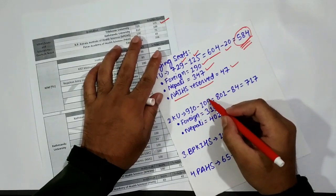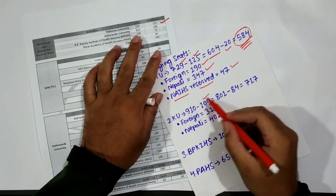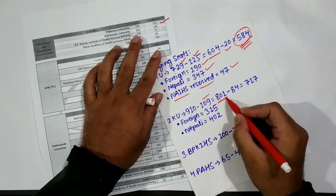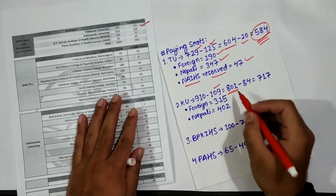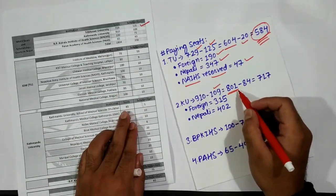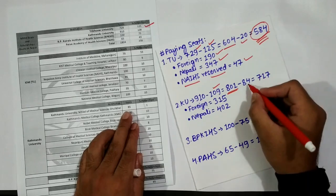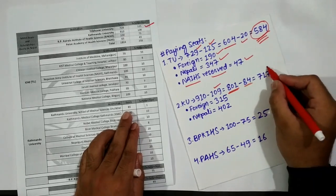Out of which 109 is for scholarship. If we deduct that, we get 801 paying seats. Out of this paying seat, if we deduct the main campus paying seat (84), we get 717.